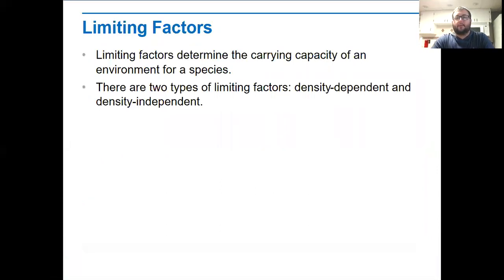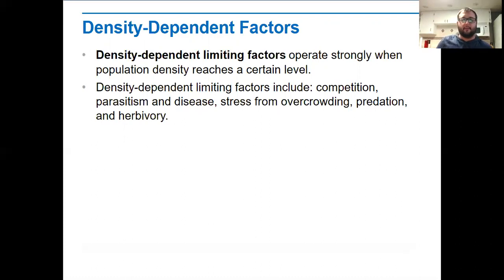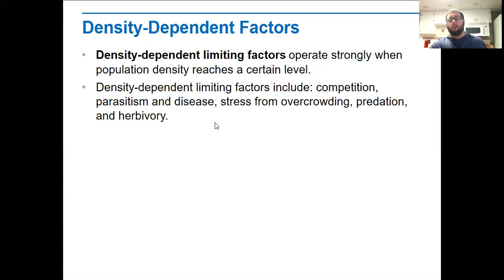Limiting factors are things that determine what the carrying capacity is — how many organisms are able to live in an area. We're talking about things like food, water, and shelter. There are two different types: density dependent and density independent. A density dependent limiting factor depends on the size of the population. Examples include competition — two members of the same population competing for food, water, and shelter — as well as parasitism and diseases. If there's a parasite or disease spreading through the population, the size of that population affects how fast those diseases spread. We also talk about stress of overcrowding and stress of predation and herbivory.